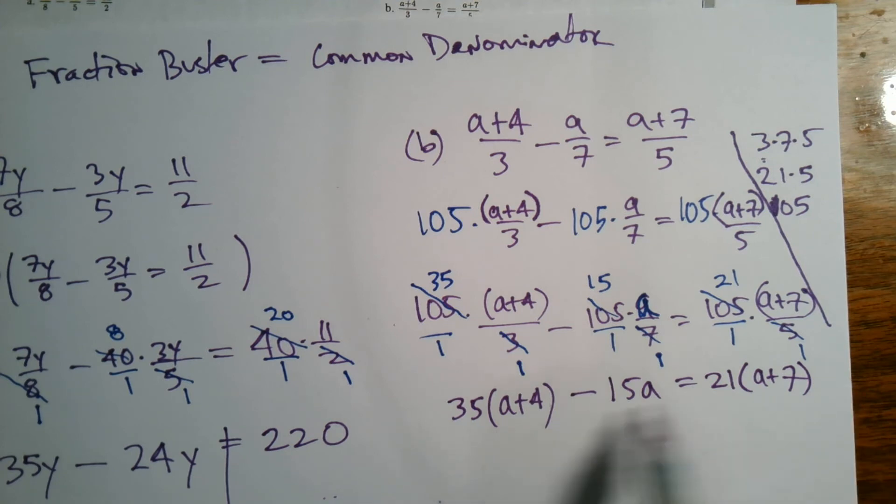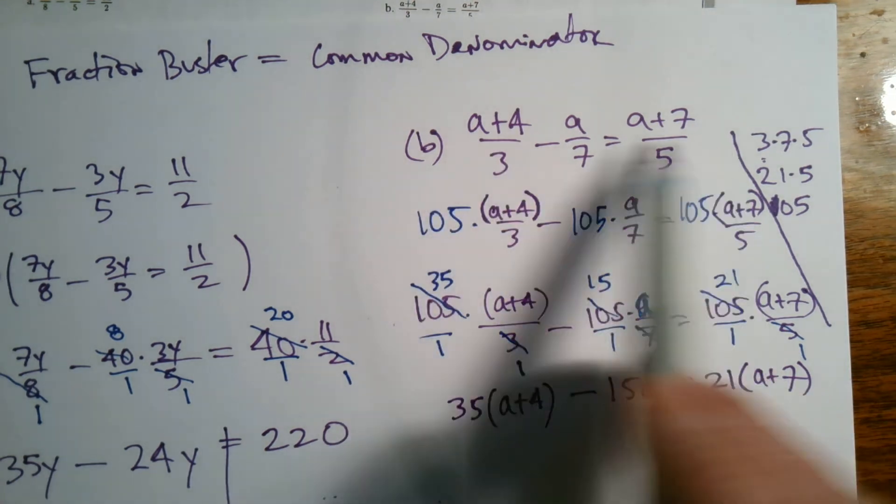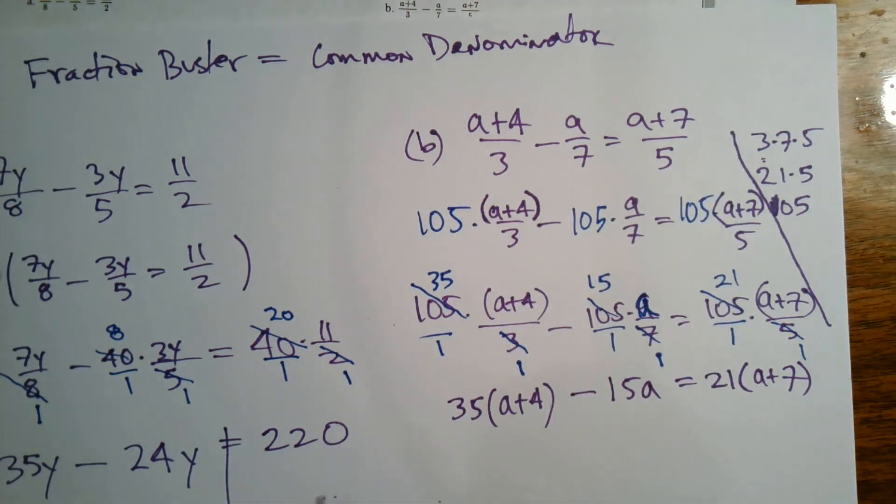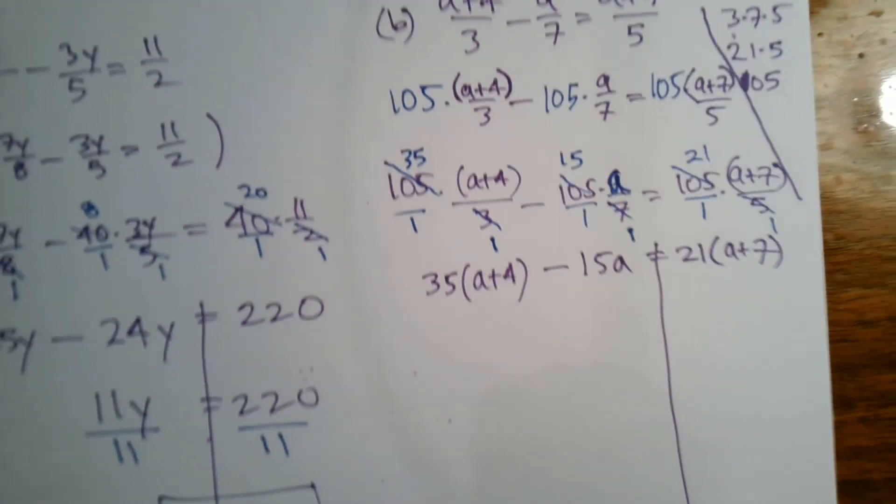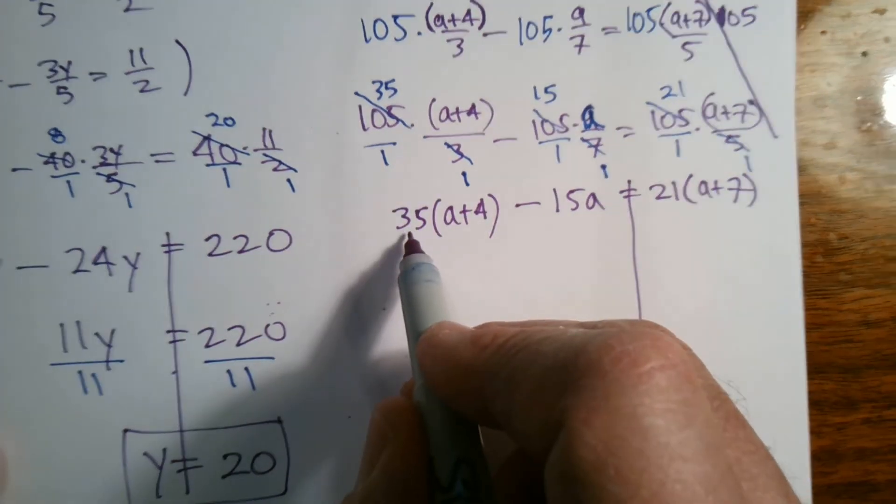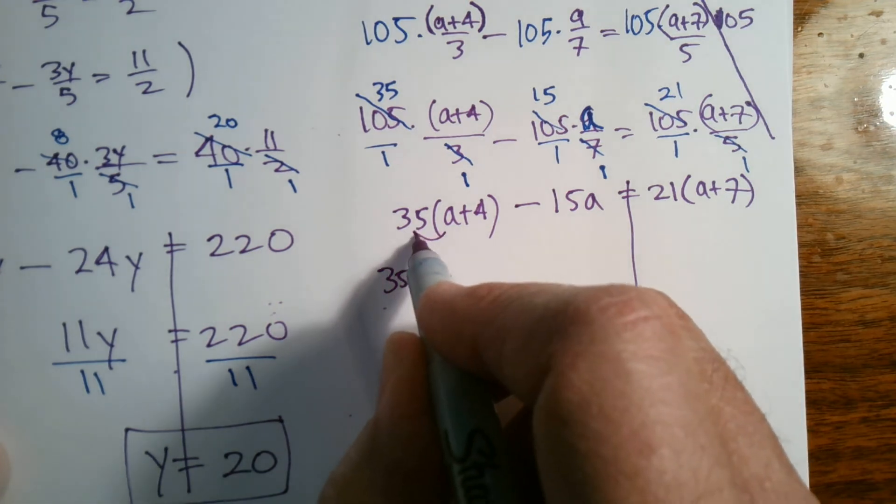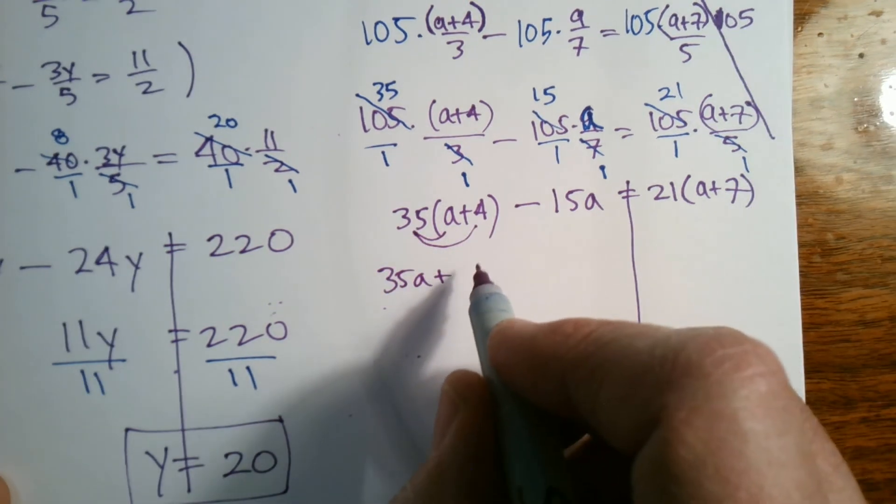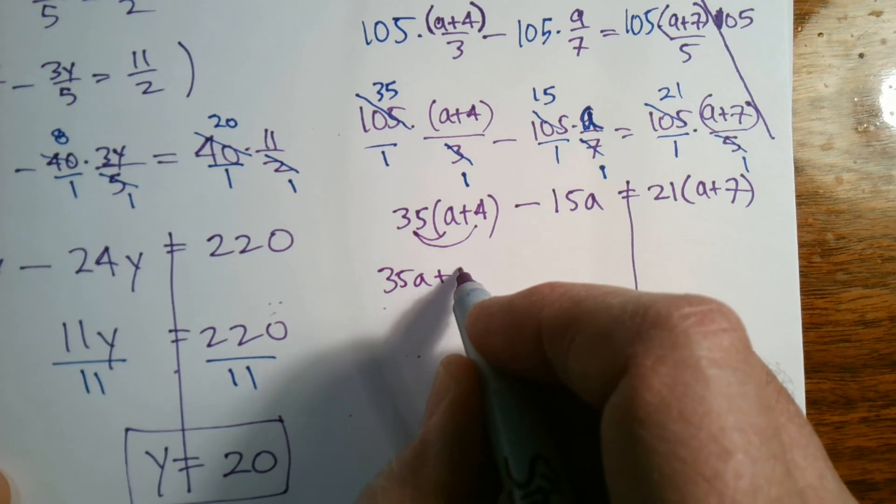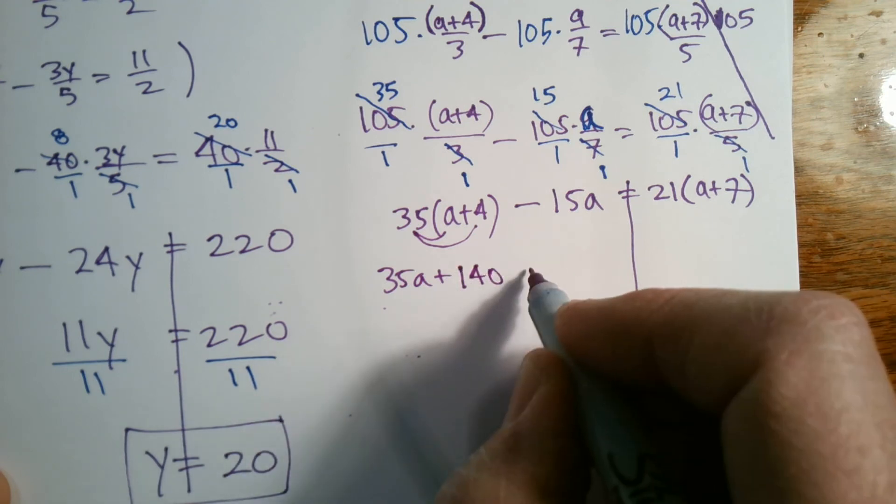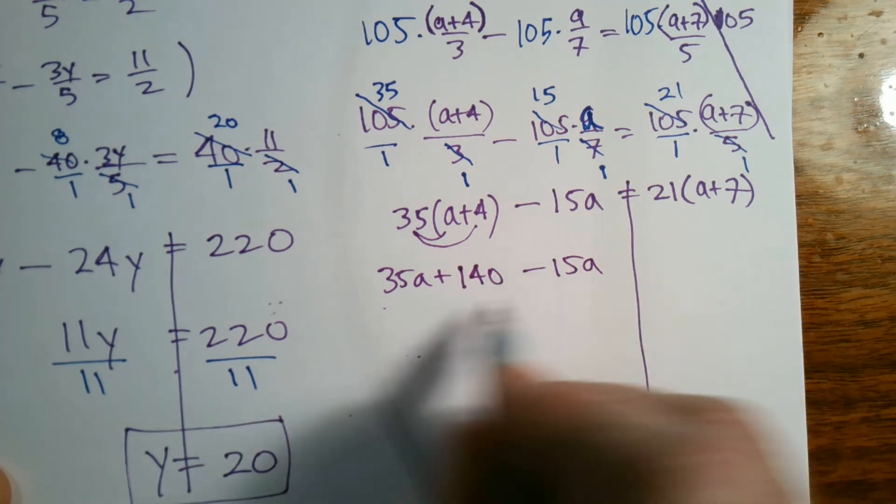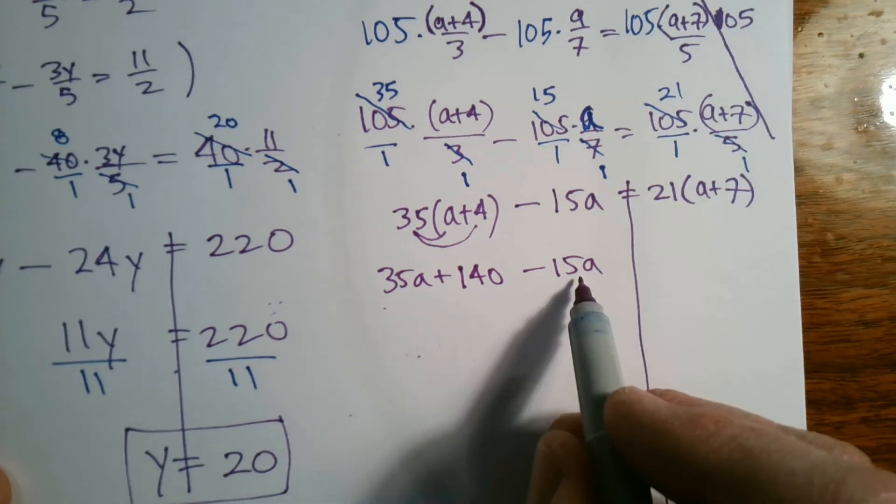So I have an equation - still looks kind of messy but it doesn't longer have any of these fractions. So I can at this point just continue to simplify this and get my a alone. So I'll distribute. So this is 35a plus I got to distribute times that and times that. So 4 times 35 is 140, and then minus 15a.